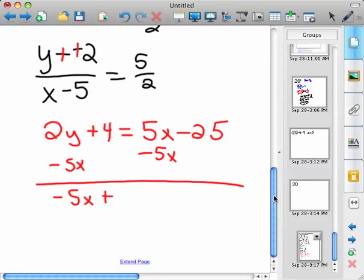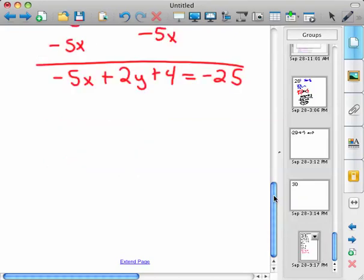I guess we can put the 4 first. Commutative property doesn't matter. So 2y + 4 = -25. Or commutative property would allow us to do that. And then I will subtract the 4 from both sides.